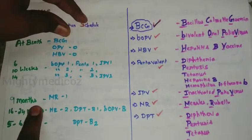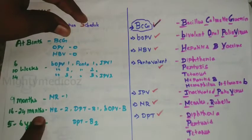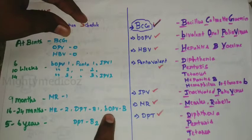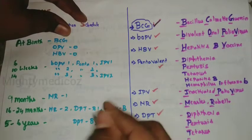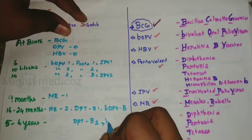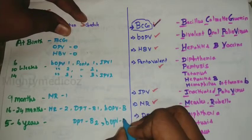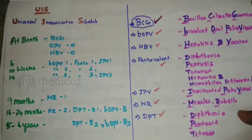At 9 months, MR vaccine 1st dose is given. At 16 to 24 months: MR vaccine 2nd dose, DPT booster 1, and bivalent OPV booster. At 5 to 6 years: DPT 2nd booster plus OPV 2nd booster. This is the universal immunization schedule.